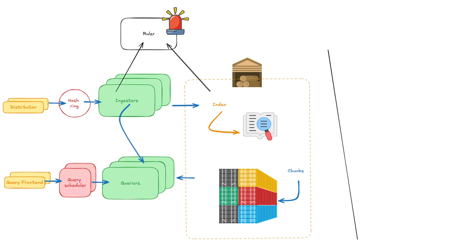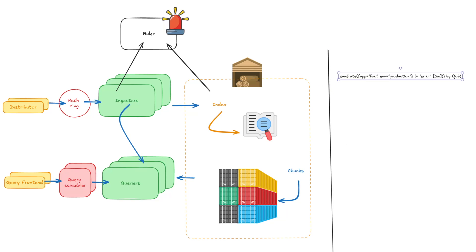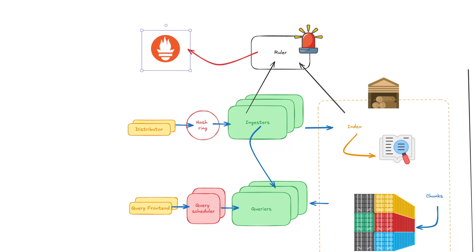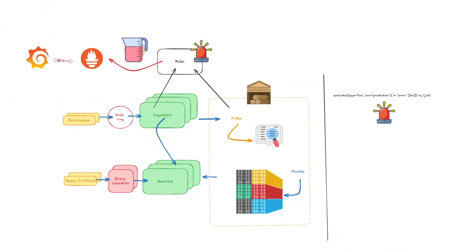Next up is the ruler. The ruler is like the quality control department — it monitors the stored logs in two ways. The first is alerting: alerting rules allow you to define alert conditions based on LogQL and send notifications about firing alerts to an external service. For instance, we might see a high intake of logs containing the log level error that we might want to know about. The second role is recording rules, which allow you to run intensive metric queries over your log data at given intervals — for example, the current percentage of each log level over the last day. These metrics are pushed into a time series database like Prometheus so they can be retrieved by Grafana, reducing the overall load on Loki for costly queries.